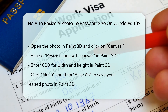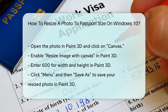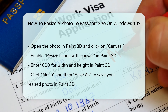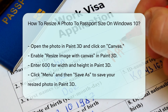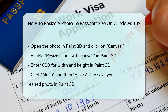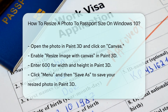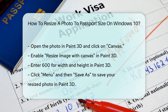For more precise control, use the Paint 3D app. Open the photo in Paint 3D and click on Canvas. Enable Resize image with canvas, and enter 600 for both width and height. Click Menu and then Save As to save your resized photo.